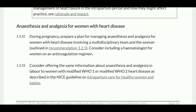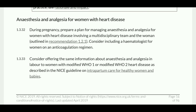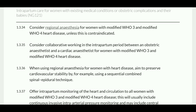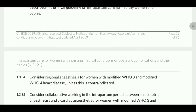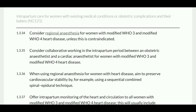Regarding anesthesia and analgesia for women with heart disease: during pregnancy, prepare a plan for managing anesthesia and analgesia involving a multidisciplinary team and the woman. Consider including a hematologist for women with an anticoagulation regimen. Consider offering the same information about anesthesia and analgesia in labor for women with modified WHO 1 and WHO 2 heart disease as outlined in the NICE guideline. For modified WHO 3 and WHO 4 heart disease, consider regional analgesia and anesthesia unless contraindicated.